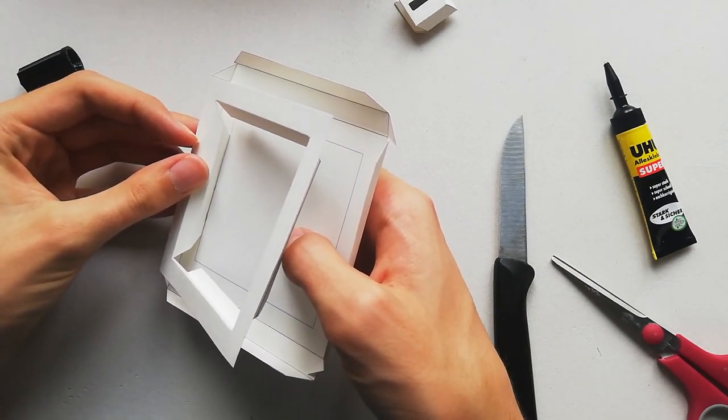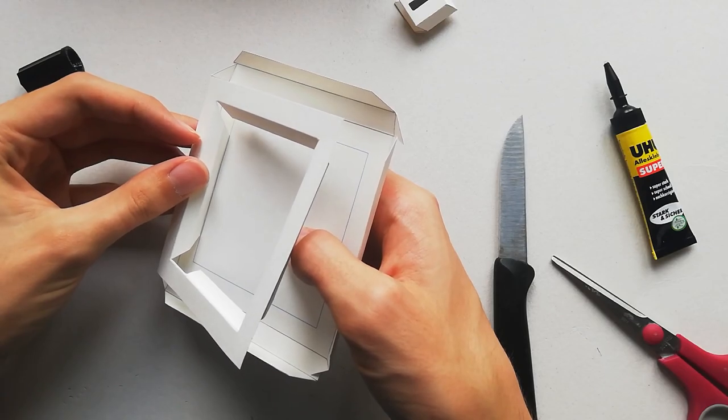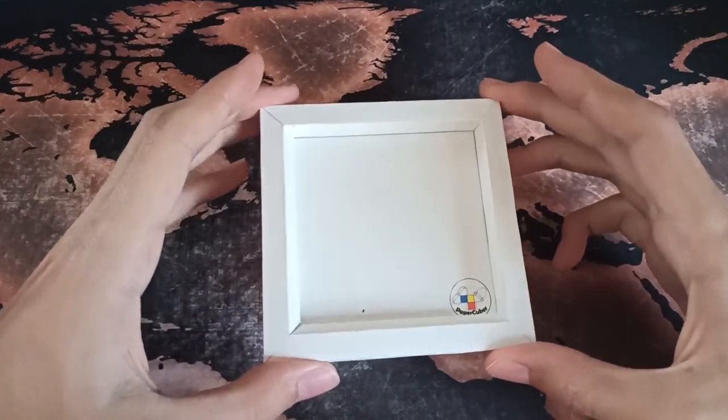When this is done with all four sides of the frame all that's left to do is to glue on the outer wall of the frame.